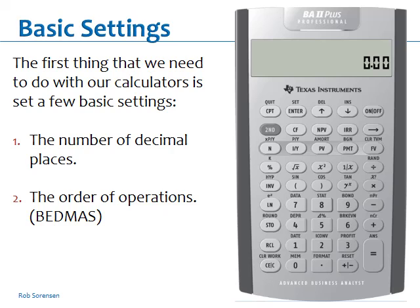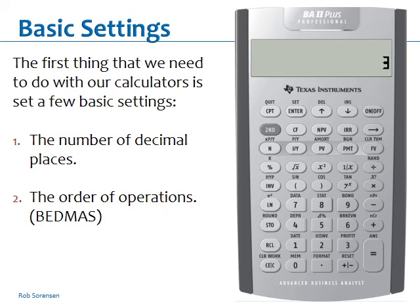When we first get our calculators they're typically set up with two decimal places, and if you turn it on you'll see 0.00. If I go 2 divided by 4, you get 0.50 — I get an extra 0 on the end there. I really only just need the 0.5 but it gives me two decimals. Same thing if I go 2 divided by 3 — that's a repeating number. That's going to be 0.6666 etc., but it rounds it to two decimal places and gives me 0.67.